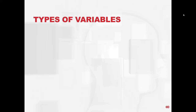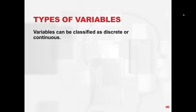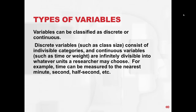So what are the types of variables? Variables can be classified as discrete or continuous. Discrete variables, such as class size, consist of indivisible categories. Continuous variables, such as time or weight, are infinitely divisible into whatever units a researcher may choose.